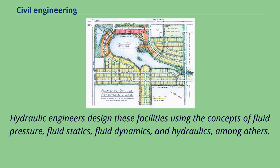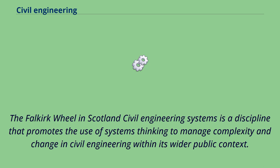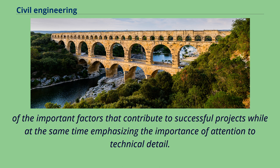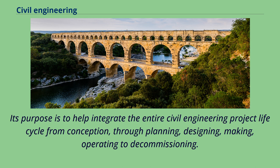Civil Engineering Systems is a discipline that promotes the use of systems thinking to manage complexity and change in civil engineering within its wider public context. It posits that the proper development of civil engineering infrastructure requires a holistic, coherent understanding of the relationships between all of the important factors that contribute to successful projects, while at the same time emphasizing the importance of attention to technical detail. Its purpose is to help integrate the entire civil engineering project life cycle from conception, through planning, designing, making, operating to decommissioning.